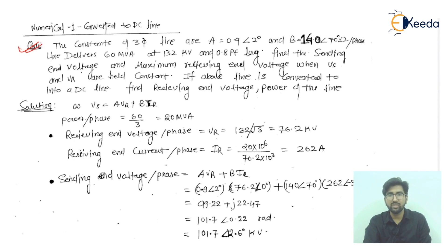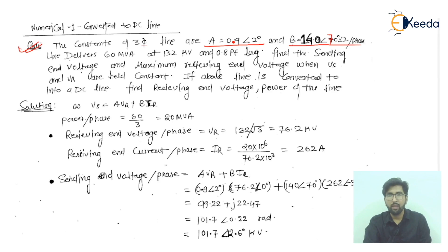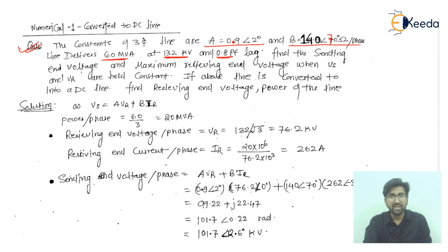The question states that the constants of the three-phase line are: A = 0.92 at angle 2 degrees (given in polar form), and B = 140 at angle 70 degrees. A three-phase line delivers 60 MVA at 132 kilovolts with a power factor of 0.8.